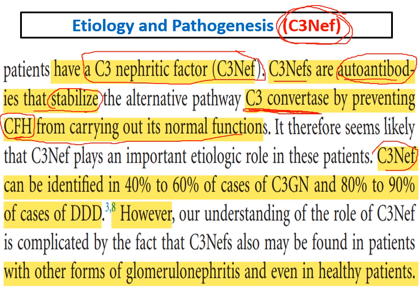C3 nephritic factors can be identified in 40-60% of cases of C3 glomerulonephritis and 80-90% of cases of dense deposit disease. However, C3 nephritic factors can be present with other forms of glomerulonephritis and even in healthy patients — they are not pathognomonic for C3 glomerulopathy.